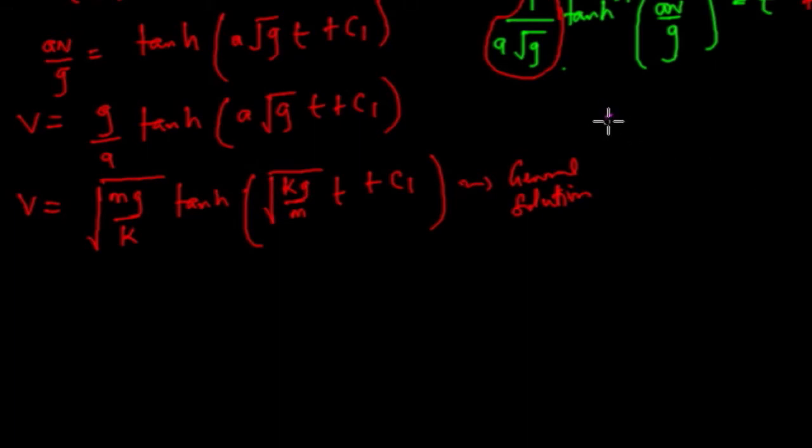So using t equals zero, we would have v equals v naught. So this becomes v naught. So we're going to have v naught equals the root of mg over k. t equals zero and this goes to zero.